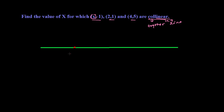We have three points on the line. Point A is (x, -1), point B is (2, 1), and point C is (4, 5). If these points are collinear, we can find the slope of line AB and then find the slope of line BC.